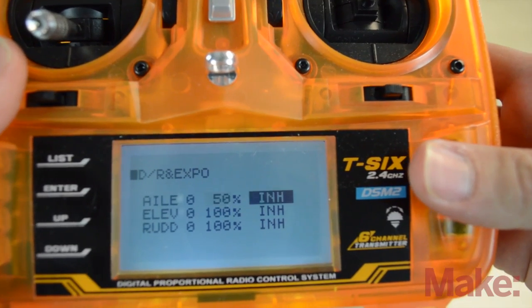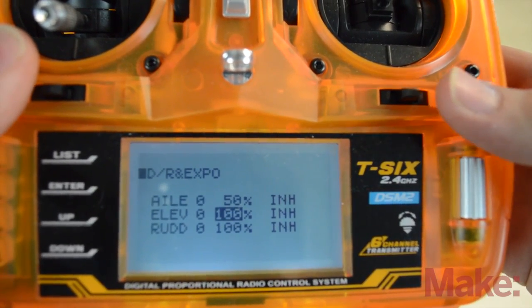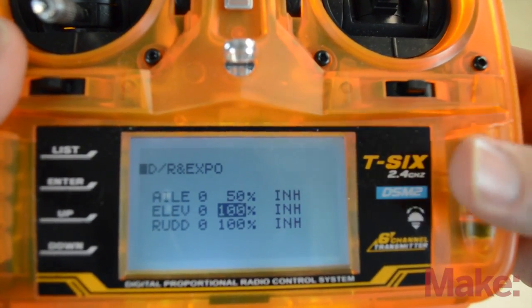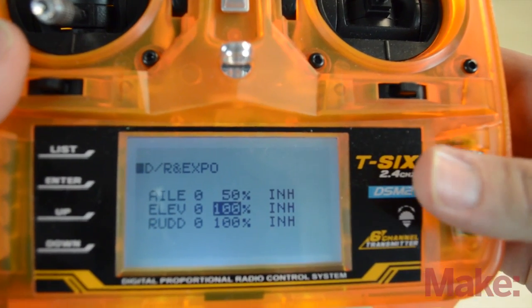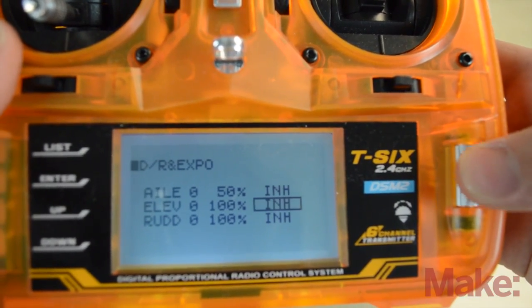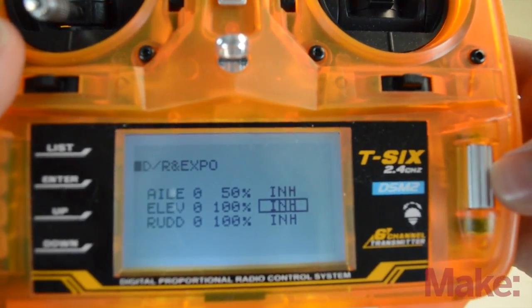The elevator is okay at 100 percent either way since we set the travel adjust for its limits, and you definitely do want to keep it like that. But what we can do is add some expo so that it's a little bit more controllable at the lower ends of the stick.